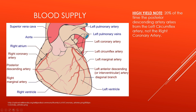The posterior descending artery arises from the right coronary artery in most people, but 20% of the time it arises from the left circumflex artery. A high-yield question may tell you the left circumflex artery is occluded and the posterior interventricular septum is damaged — and ask how this is possible. The answer is that in one out of five patients, the left circumflex artery actually generates the posterior descending artery. This is a very high-yield concept.